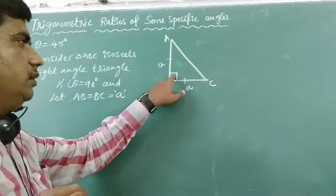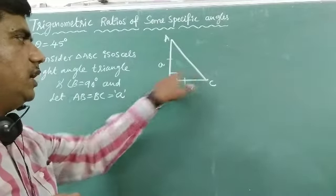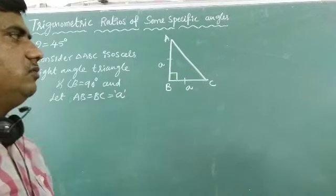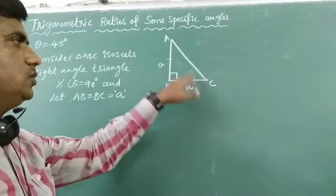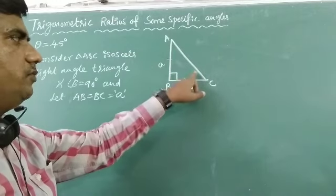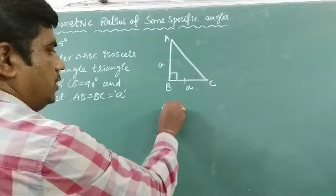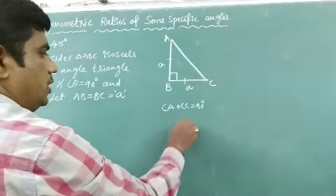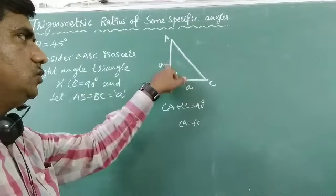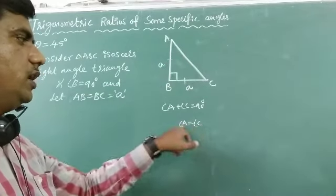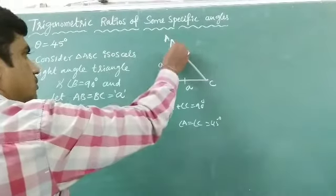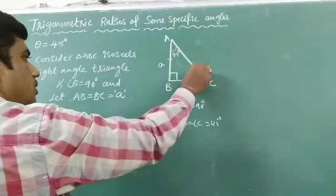When angle B is 90 degrees, the sum of the three angles is 180, so A plus C equals 90. But when these two sides are equal, their opposite angles are also equal — so angle A equals angle C. Since A plus C equals 90 and A equals C, we divide 90 into two equal parts, giving each angle 45 degrees. So this angle is 45 degrees and this one is also 45 degrees.